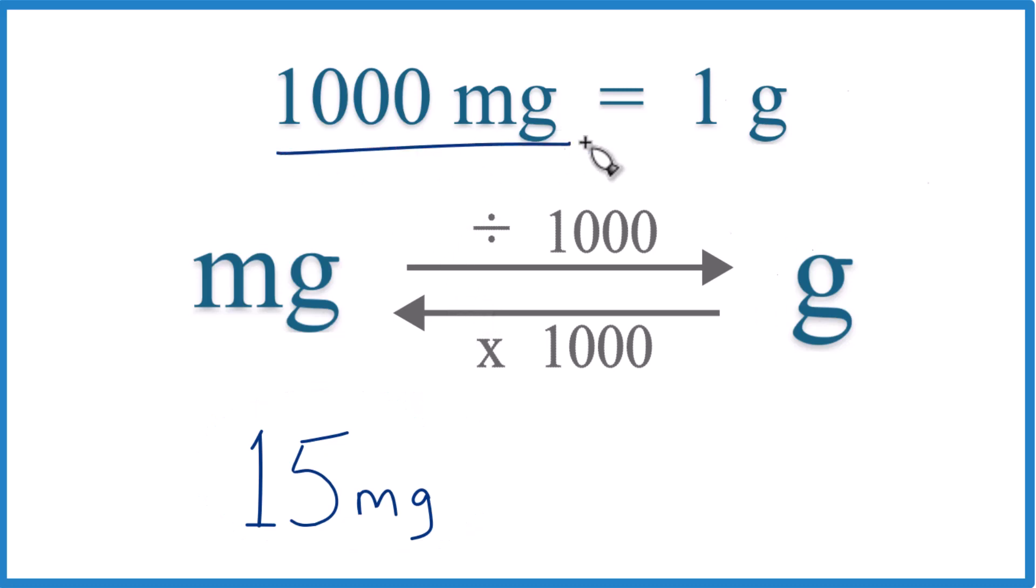You need to know that there are 1,000 milligrams in one gram. One gram equals 1,000 milligrams. That's what we call a conversion factor, and we use that when we go from milligrams to grams or grams to milligrams.